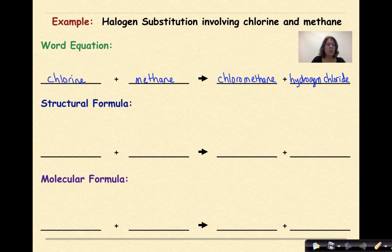Structurally, this would be a Cl bonded to another Cl. Methane, we know, is a carbon with four hydrogens. Chloromethane is a carbon with three hydrogens, where one of those hydrogens have been replaced by a chlorine. And at the end, we'll have hydrogen chloride.